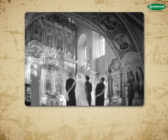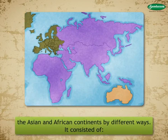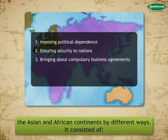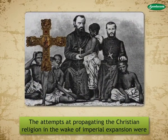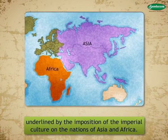Various Forms of Imperial Domination: In order to achieve the imperial objectives, the European nations brought dominion over the Asian and African continents in different ways. It consisted of imposing political dependence, ensuring security to nations, bringing about compulsory business agreements, creating business monopoly, and if possible, implementation of the divide and rule policy. The attempts at propagating the Christian religion in the wake of imperial expansion were underlined by the imposition of imperial culture on the nations of Asia and Africa.